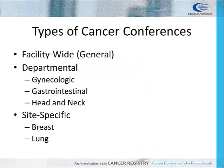There are several different types of cancer conferences that a facility can offer. Facility-wide or general conferences are open to all cancer types being discussed. For example, one cancer conference meeting could include a melanoma case, a colon case, and a lung case. Departmental conferences focus on specialty departments such as GYN, GI, or head and neck. Site-specific conferences only review one site, such as a breast or lung cancer.